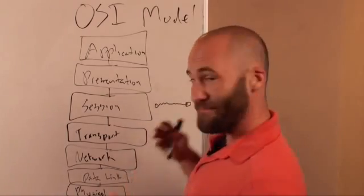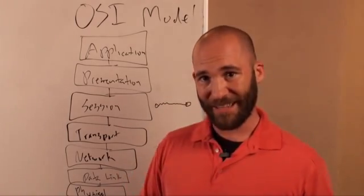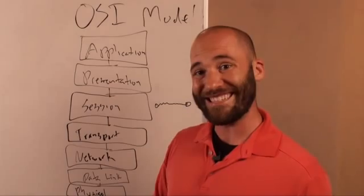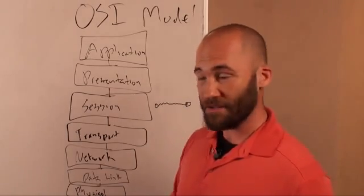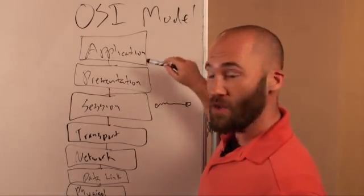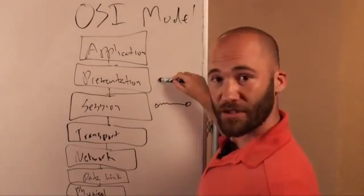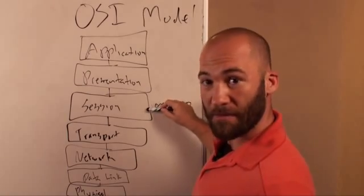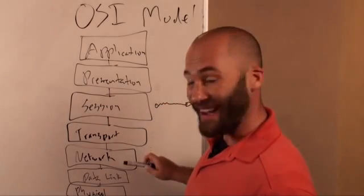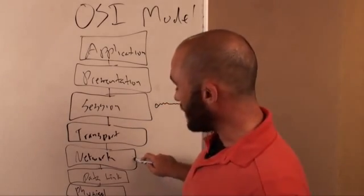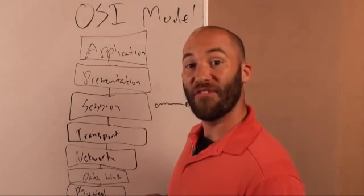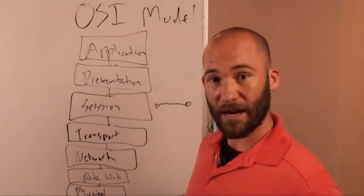So basically, that's all you've got — seven layers. You've got the application layer, the presentation layer, the session layer, the transport layer, the network layer, the data link layer, and then the physical layer.